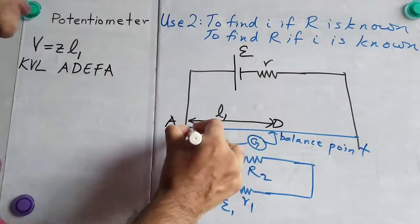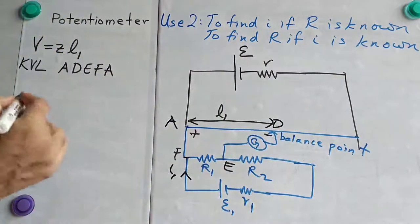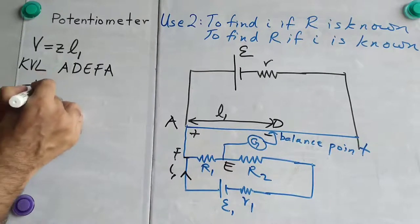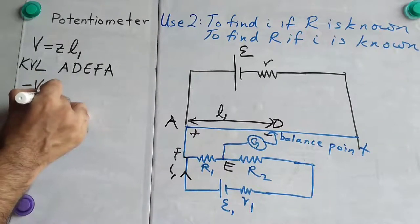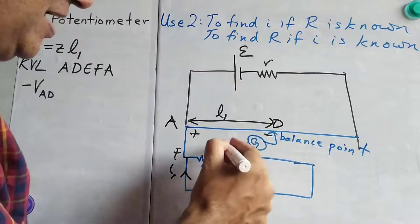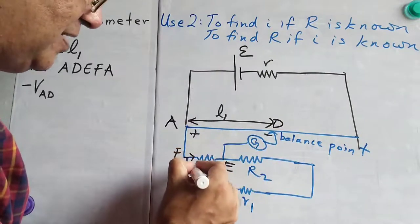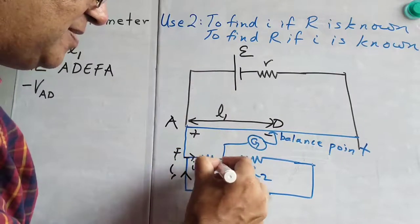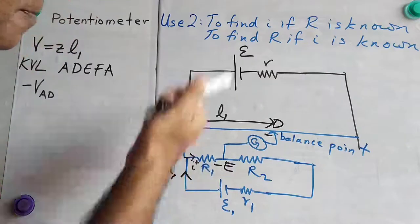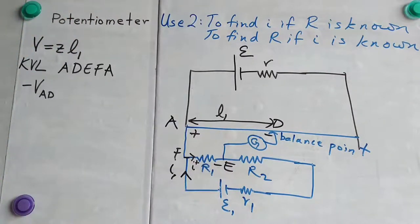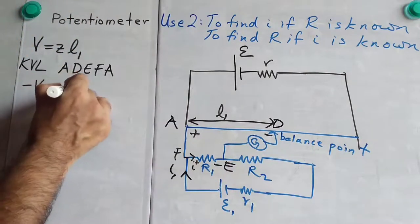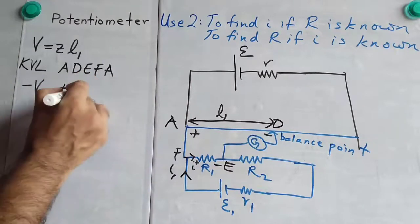First, there is a potential drop from here to here. That is given by minus V_AD. Then, we are going this way. Here, the current is going this way. This is plus, this is minus. So, we are going up in potential. So, plus I1, R1.